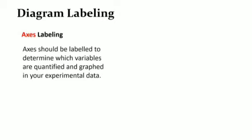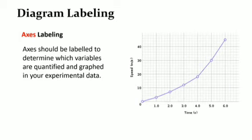The third element of diagram labeling is axes labeling. Axes should be labeled to determine the variables that are quantified and graphed in your experimental data. Here's an example. Note carefully that the X axis is labeled as time and the Y axis is labeled as speed. This helps the reader to understand or get a clearer picture of what the graph is showing and what can be interpolated or extrapolated from the graph.